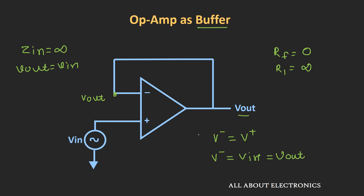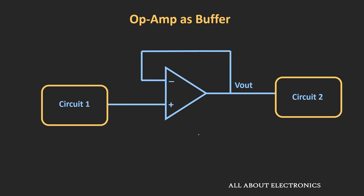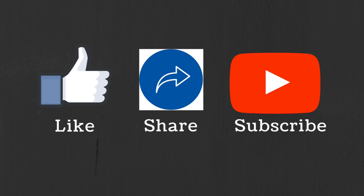Using this buffer circuit we can isolate two different circuits and ensure that whatever voltage appears at the output of one circuit will appear at the input of another circuit. This is particularly useful when we have a low input impedance in one circuit. I hope in this video you understood the non-inverting op-amp configuration, its advantages over the inverting configuration, and how to design a voltage follower or buffer circuit using an op-amp. If you have any questions or suggestions, let me know in the comment section. If you liked this video, hit the like button and subscribe to the channel for more such videos.